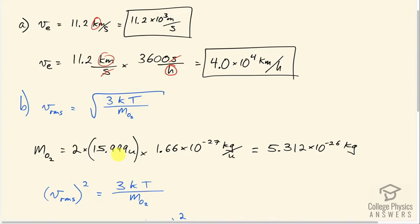Which if you look it up in a search engine, you'll get 15.999 atomic mass units, which then have to be converted into kilograms by multiplying by 1.66 times 10 to the minus 27 kilograms for every atomic mass unit, giving 5.312 times 10 to the minus 26 kilograms per oxygen molecule, which consists of two atoms, because oxygen is a diatomic molecule.